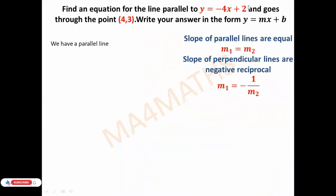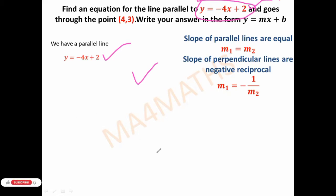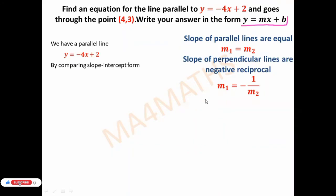The given parallel line is y = -4x + 2. We will find the slope of this line, because the slope of this line and our required line will be the same — parallel lines always have equal slopes. We find the slope by comparing with the slope-intercept form y = mx + b.